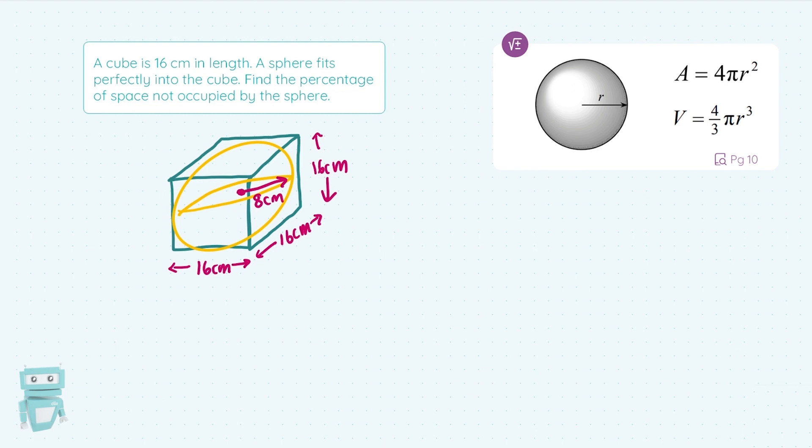Now, we want to work out the percentage of space that's unoccupied. What they're asking you for is this shaded area, these bits where the sphere doesn't touch. Obviously, when we work out the volumes of each, the volume of the sphere should be less than the volume of the cube.